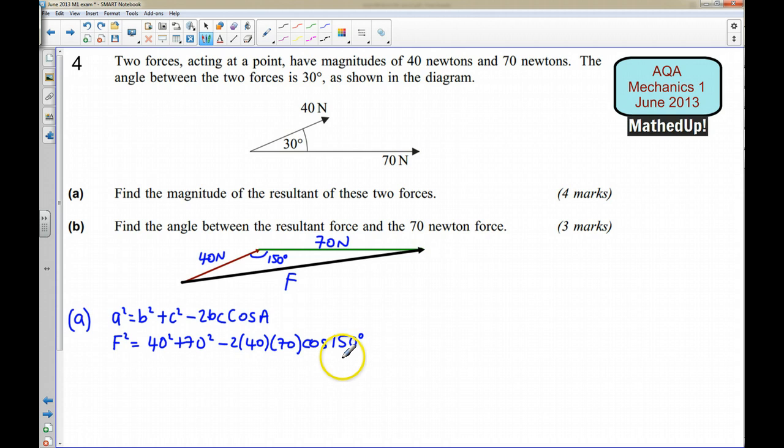If you put that all into your calculator, we should work out that F is going to be equal to 106.535 etc., and to 3 significant figures F is going to be equal to 107 newtons.